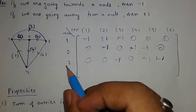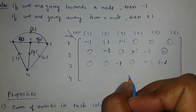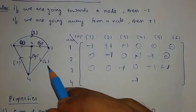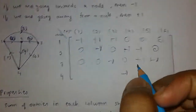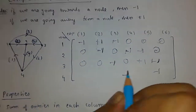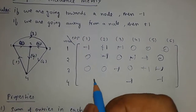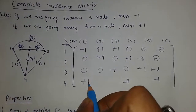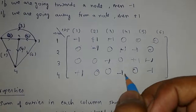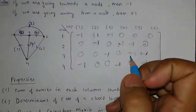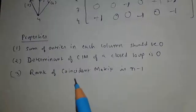In the case of node four: edge four is going towards node four, so minus one. Edge six is also going towards node four, so minus one. Edge one is going away from node four, so plus one. All other edges are zero. This is the incidence matrix for this graph.